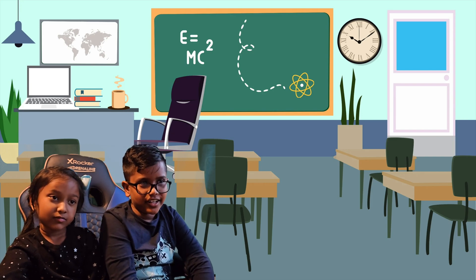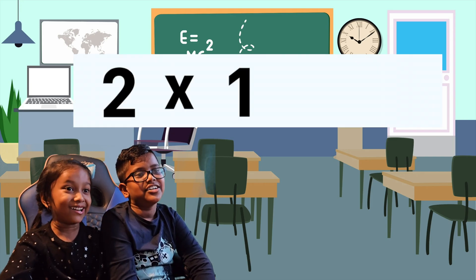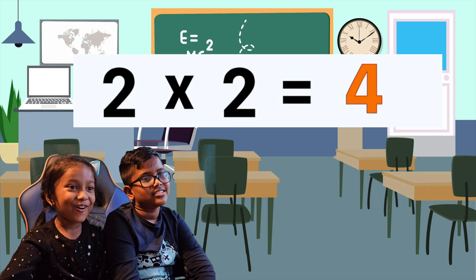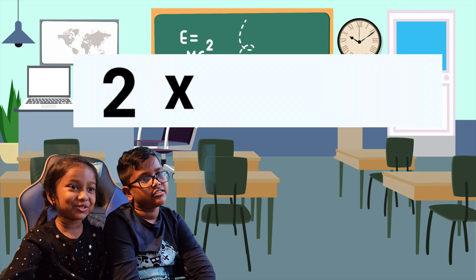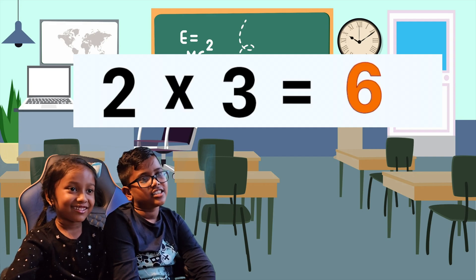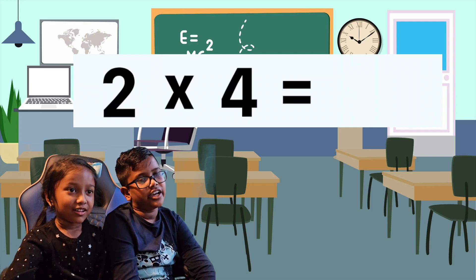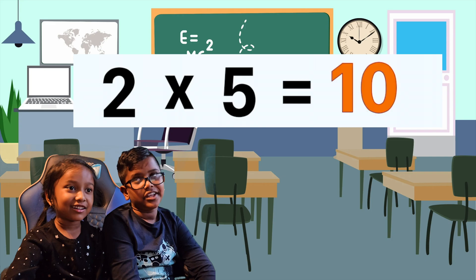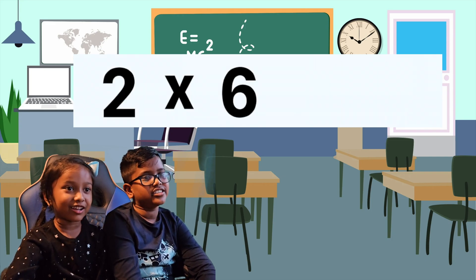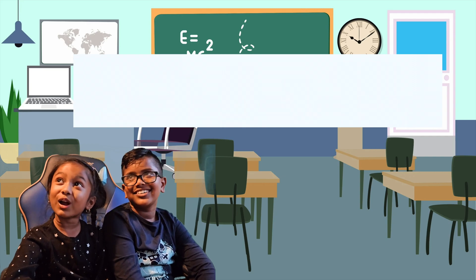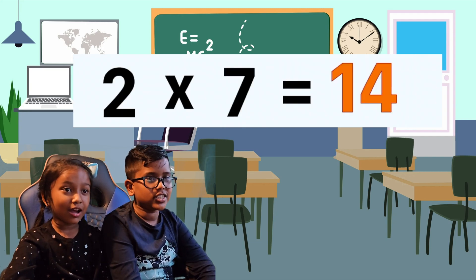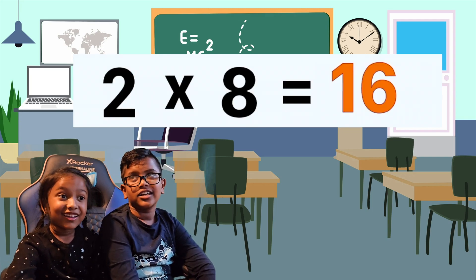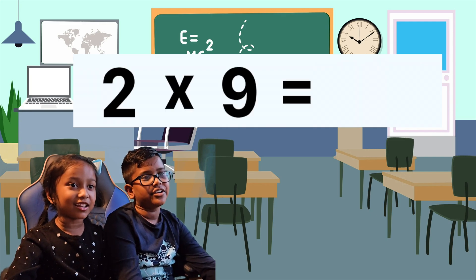Make sure to join us. 2 times 1 is 2, 2 times 2 is 4, 2 times 3 is 6, 2 times 4 is 8, 2 times 5 is 10, 2 times 6 is 12, 2 times 7 is 14, 2 times 8 is 16, 2 times 9 is 18.